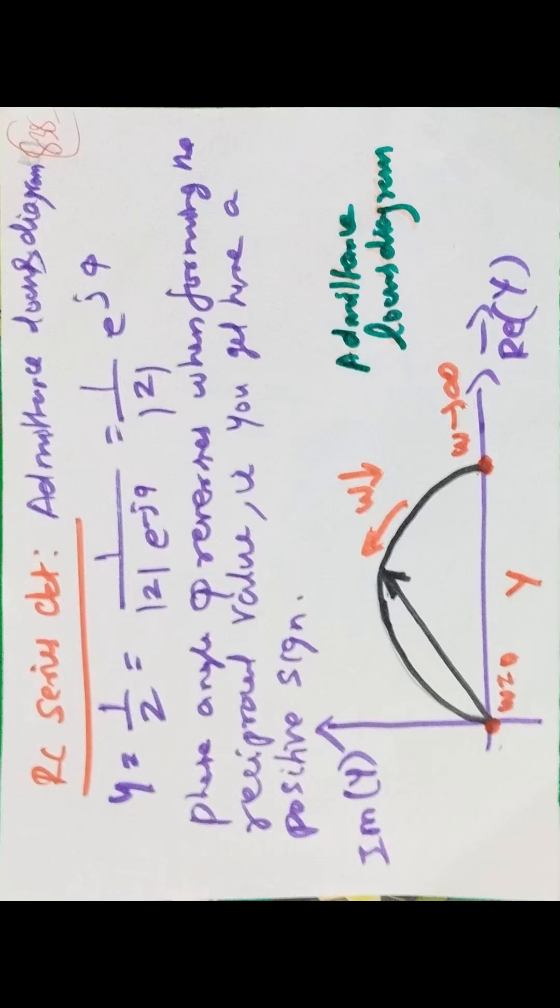For RC series circuit, admittance locus diagram is shown in figure. Y is equal to 1/Z, which is equal to 1/(|Z|e^(-jφ)) = (1/|Z|)e^(jφ). The base angle phi reverses when forming the reciprocal value, so you get here a positive sign.